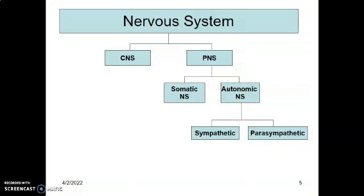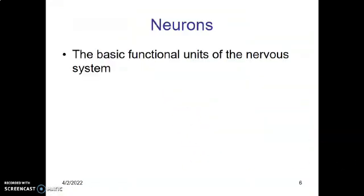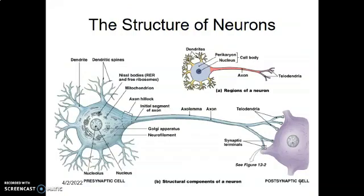Neurons are the basic structural and functional units of the nervous system.